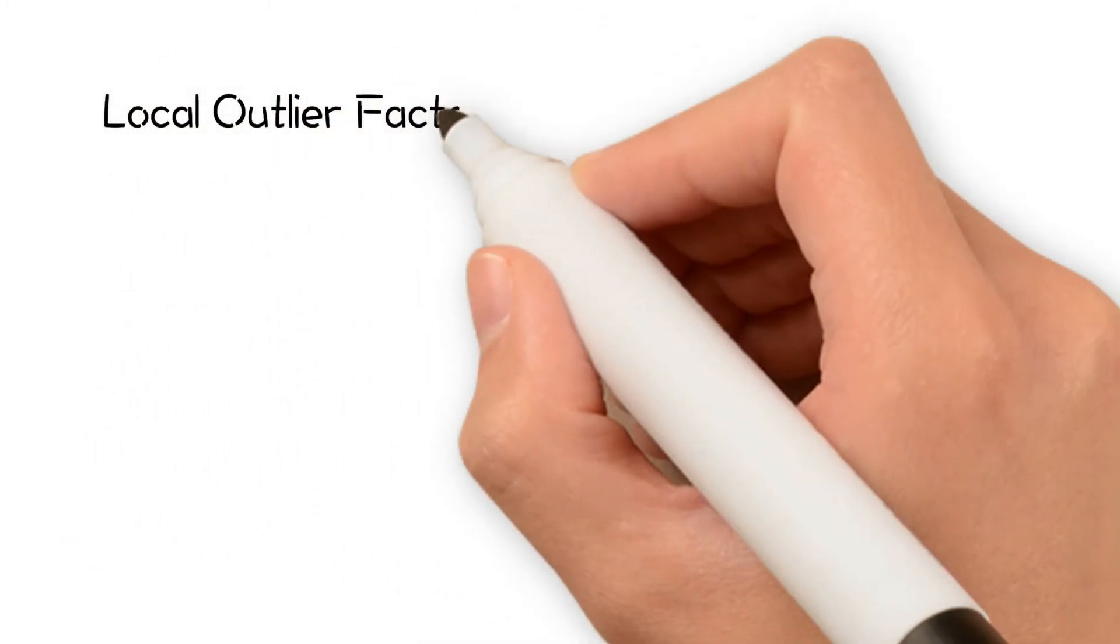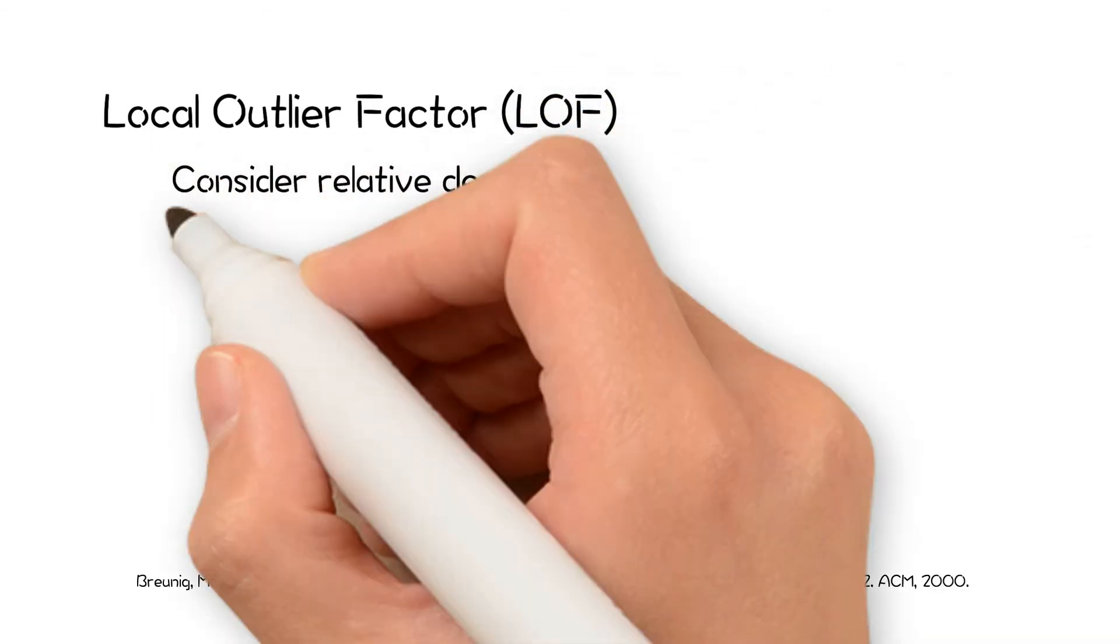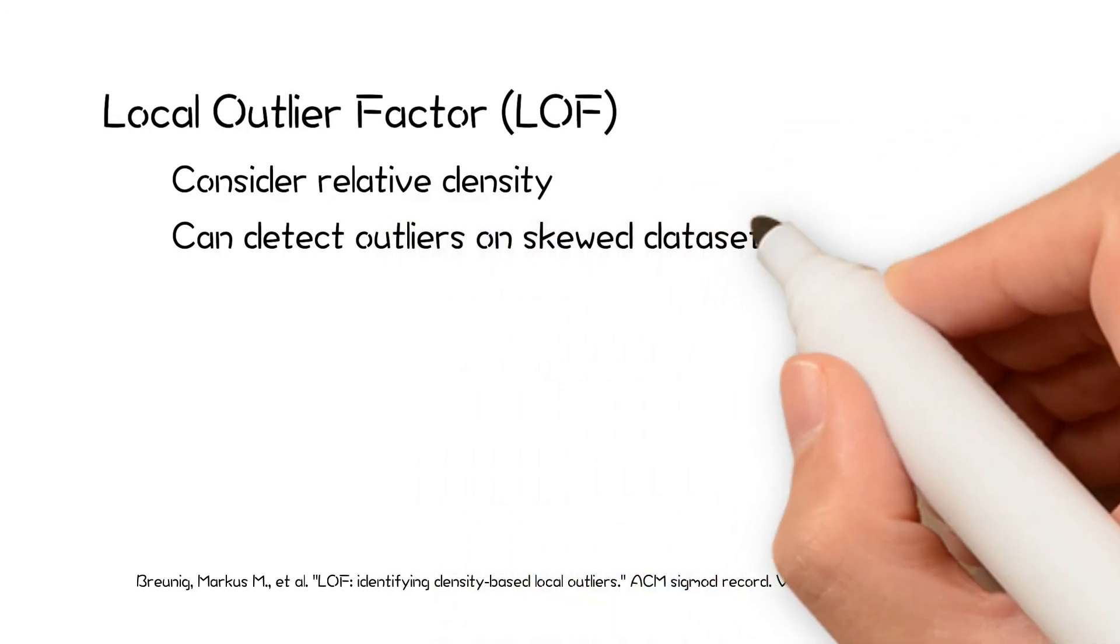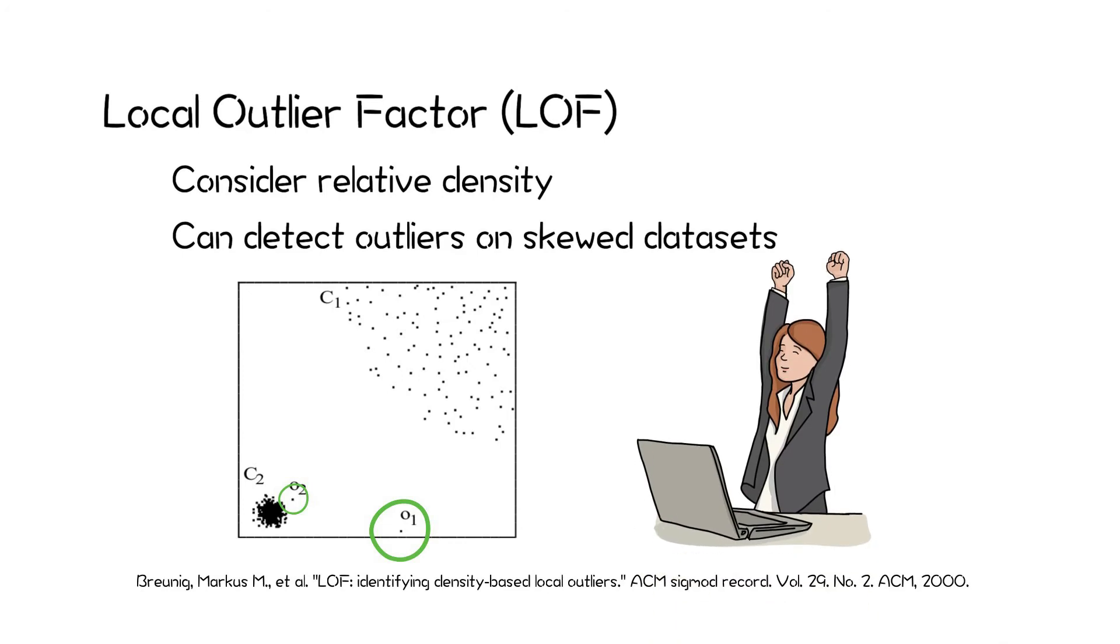The local outlier factor, or LOF algorithm, considers the relative density of data points. It can detect outliers in skewed datasets. LOF can detect both local and global outliers.